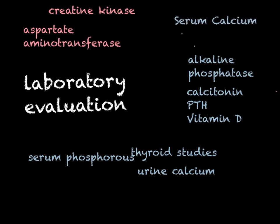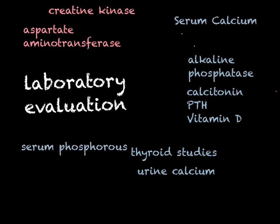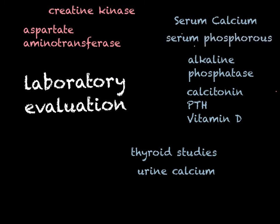Serum phosphorus is inversely related to serum calcium. Most of the time when you see elevated phosphorus, it's coming from the kidneys, but occasionally you'll see it associated with bone fractures, bone tumors, and acromegaly — that accelerated bone growth. Hypophosphatemia can be associated with osteomalacia, a condition we'll talk about in the third lecture in this series. Just have a good foundational understanding of how these factors affect the musculoskeletal system.